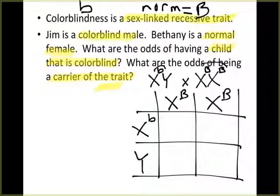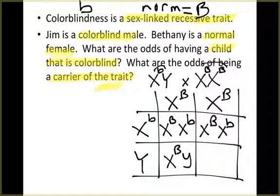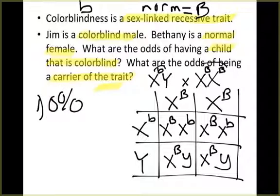Taking care to write the big B's and little b's correctly since they're really important to get right. Now, what are the odds of having a colorblind child? Remember, colorblindness is recessive — zero percent of the offspring will be colorblind. To be colorblind, a male needs the recessive allele, or a female needs both recessive alleles, and neither occurs here. The two females at the top are heterozygous, and the two males at the bottom are homozygous dominant.